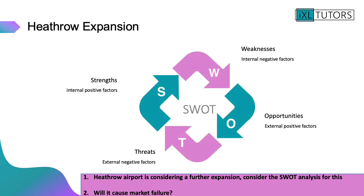The final thing we're going to look at today is a SWOT analysis. Heathrow Airport is considering a further expansion. Complete a SWOT analysis considering: the strengths — the internal positive factors for Heathrow as a business to expand; the weaknesses — internal negative factors like cost and money; the threats — external negative factors such as traffic congestion and negative impacts on the rest of society; and the opportunities — such as the increase in jobs, the increase in tourism, and the positive impact on the government. And finally, will the expansion cause market failure?